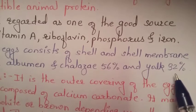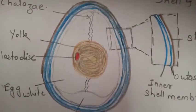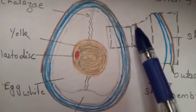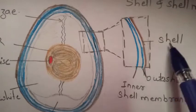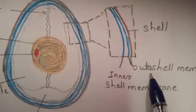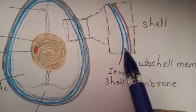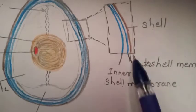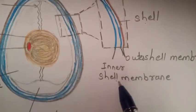Looking at the diagram of hen's egg: the outer covering is known as the shell, shown here in brown color. The shell is made up of three layers — the outermost layer is known as the shell, and the inner two layers are known as the outer shell membrane and inner shell membrane.